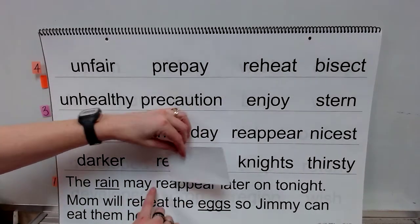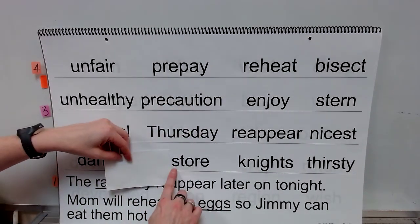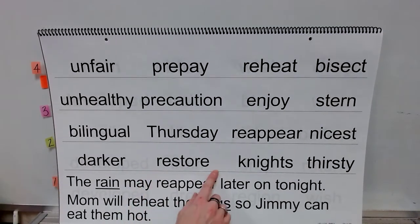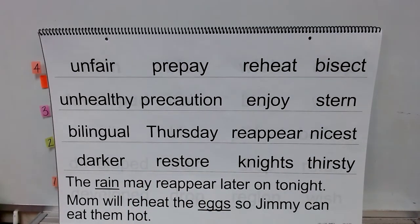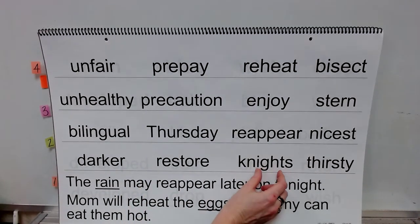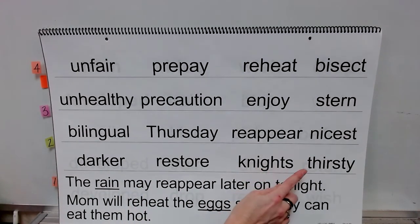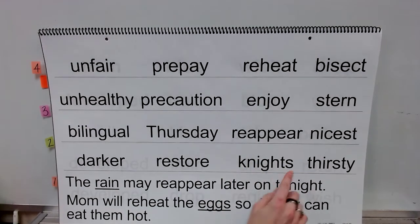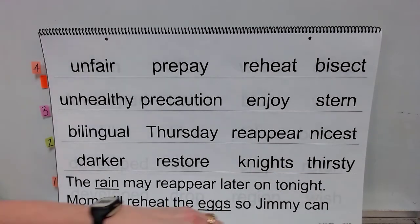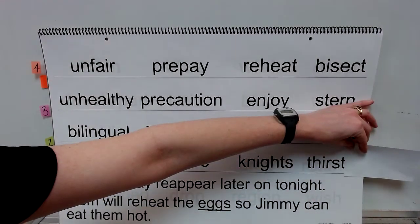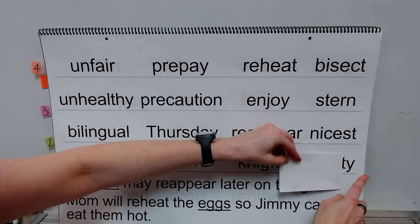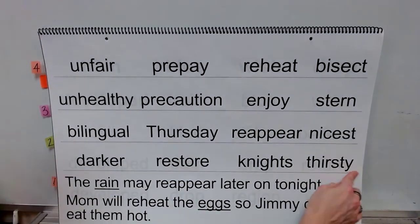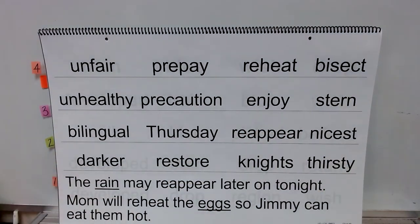Prefix: re. Base word: store. Word: restore. Sound: i. Word: knights. Base word: thirst. Suffix: y. Word: thirsty.